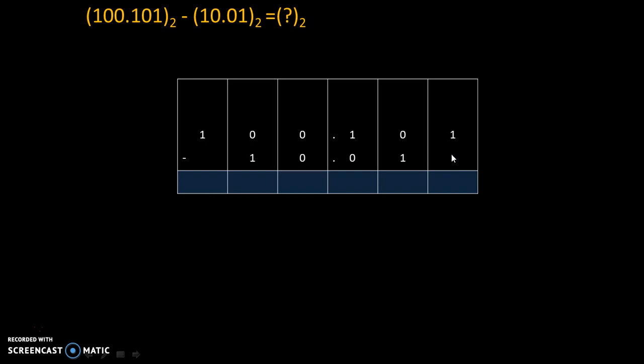1 minus nothing is given means 0 is there. So, 1 minus 0 is 1. 0 minus 1. That's why we cannot subtract 1 from 0. That's why we will take borrow from here. So, this number will get cancelled, and 0 will remain over here, and that 1, we will take over here, and it will become 10.